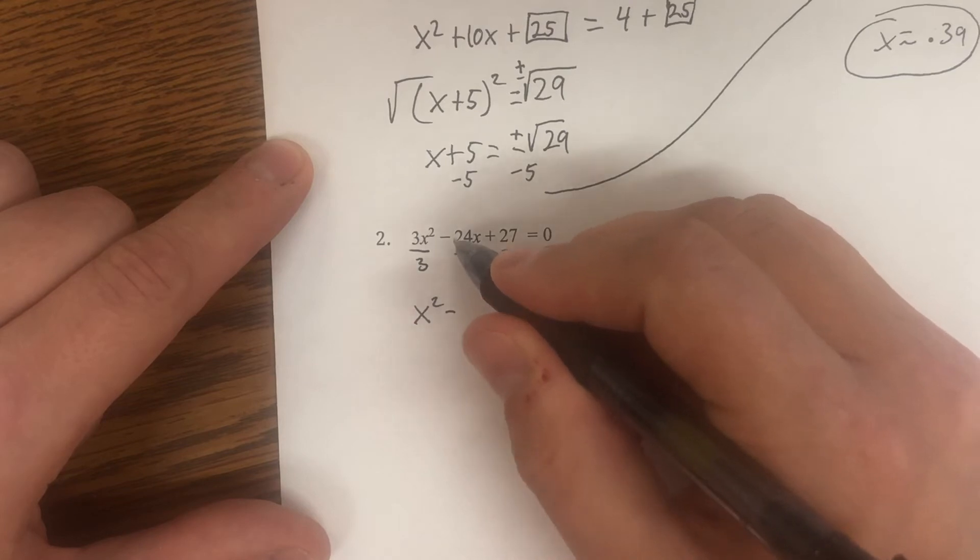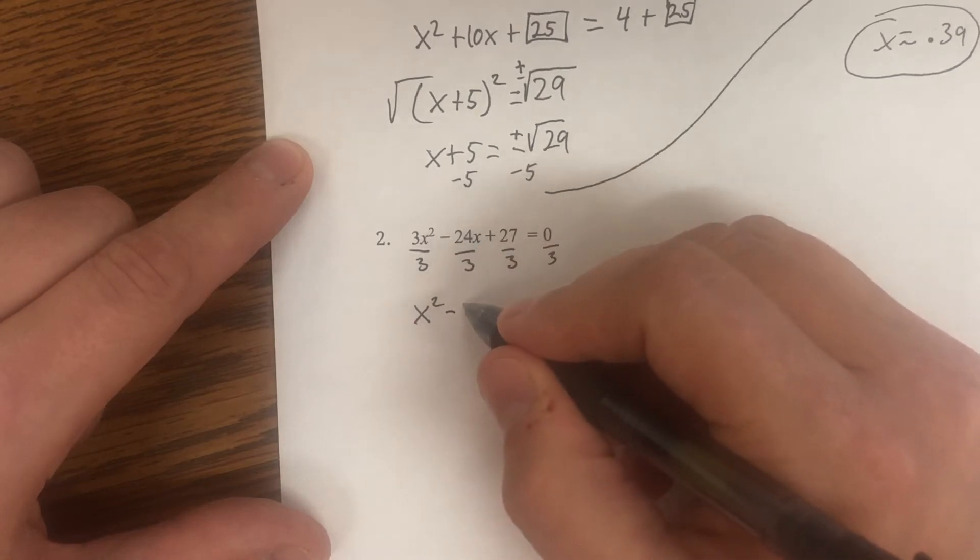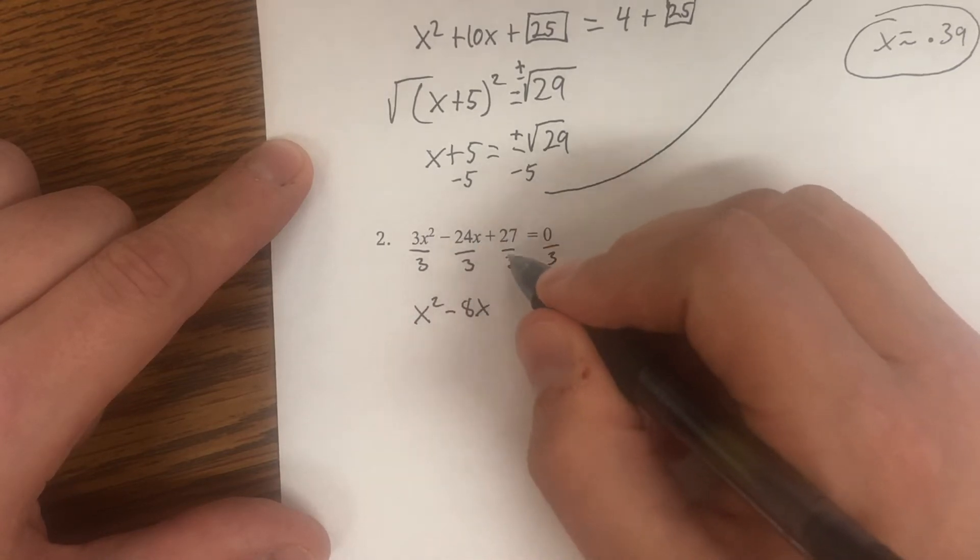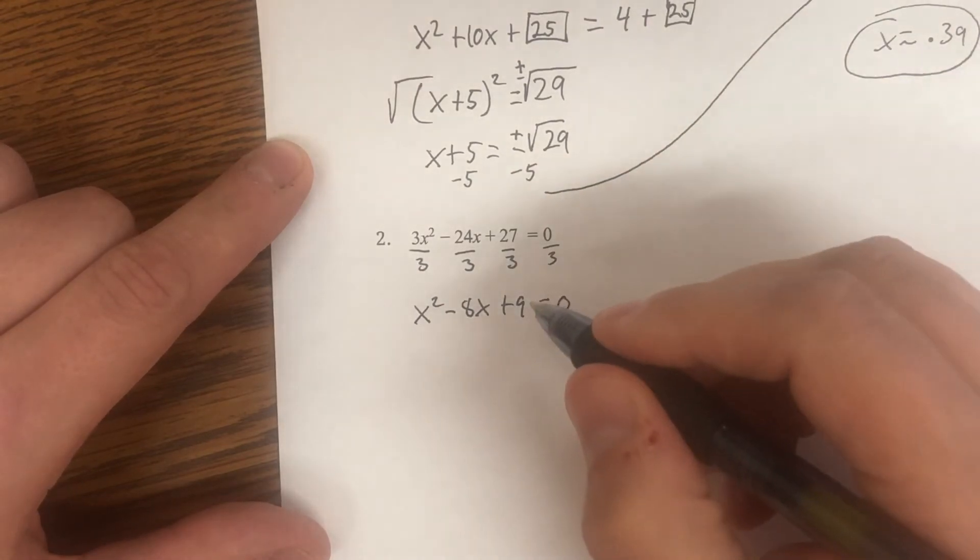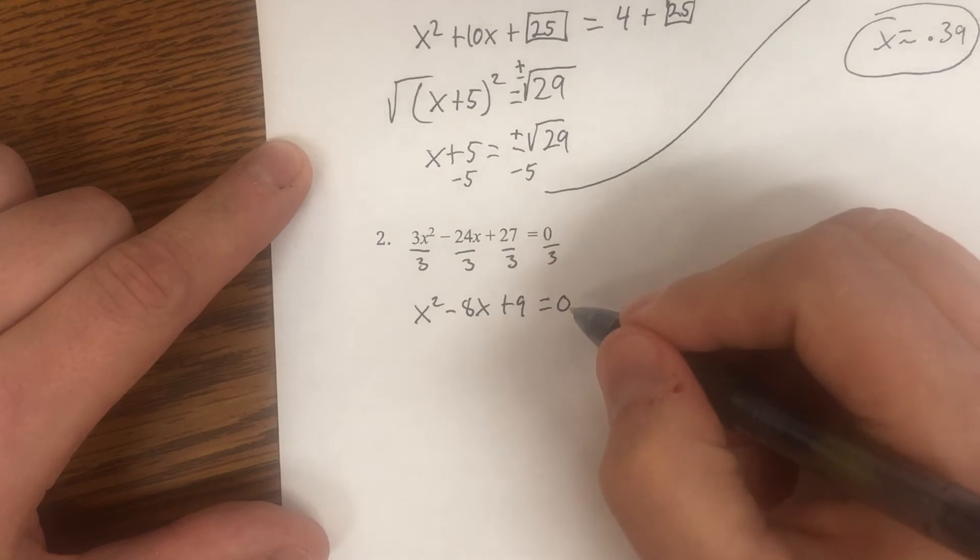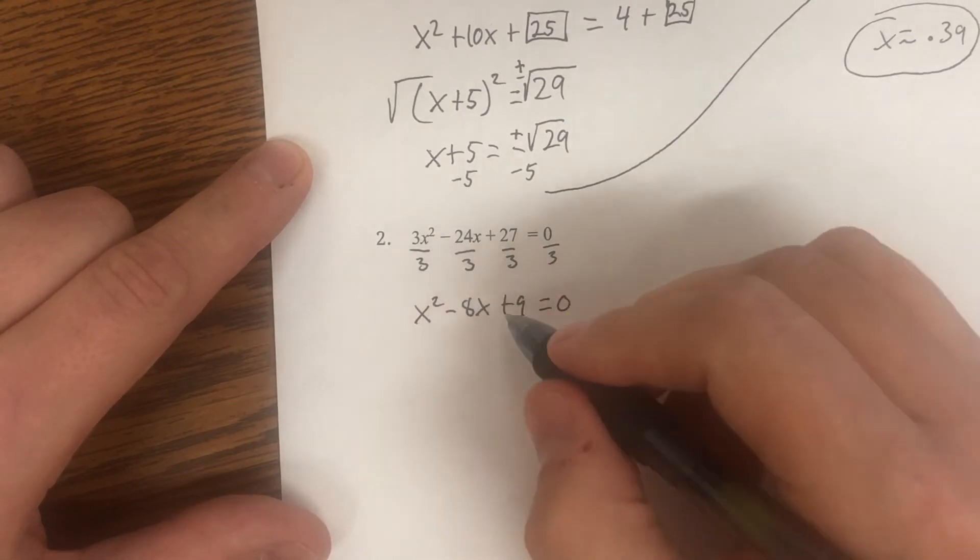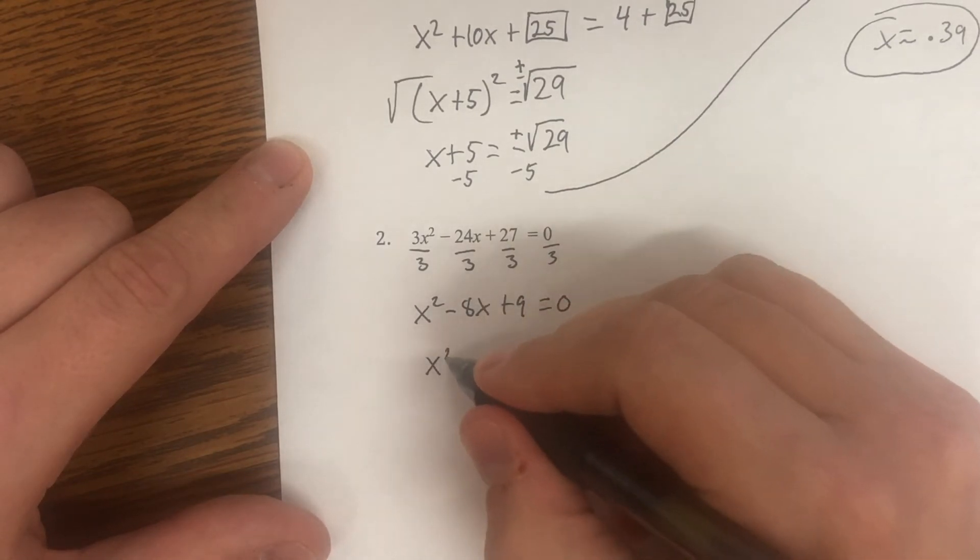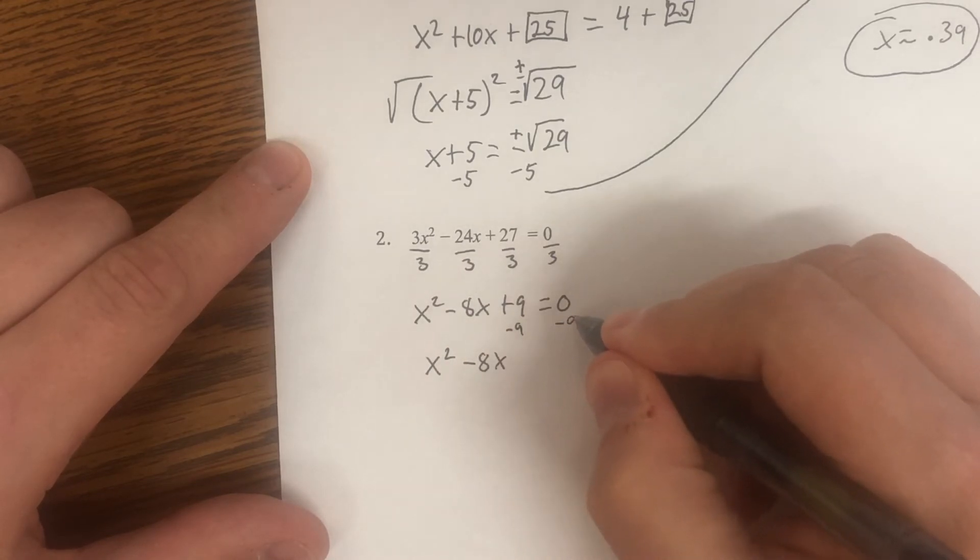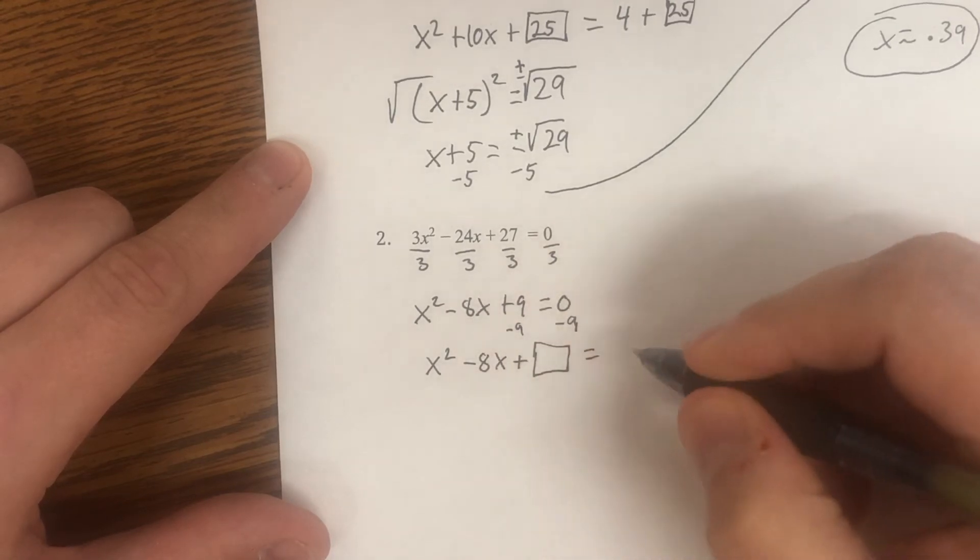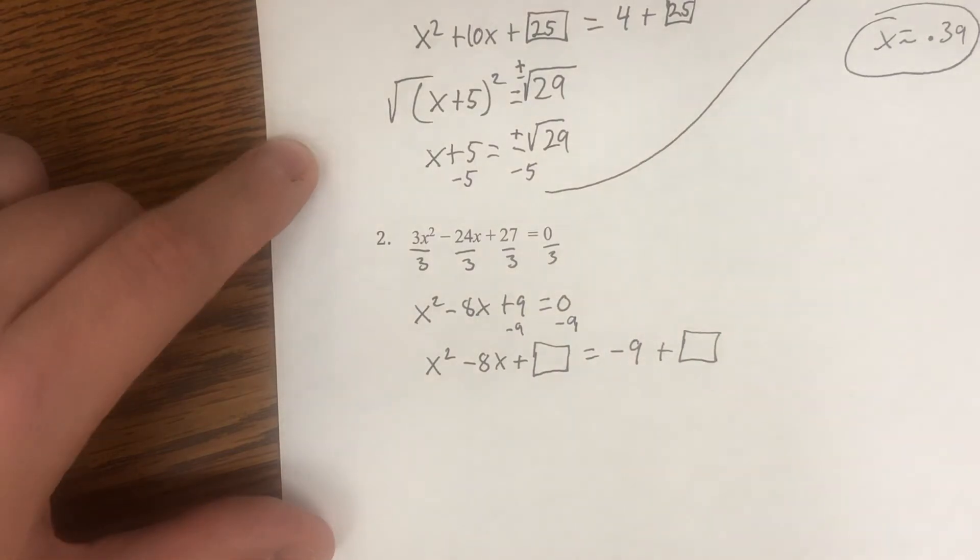So we divide everything by what that is, which is three. All terms by three. Three over three is one. Now our leading coefficient is one. 24 divided by three, we have a negative, so that's negative eight x. 27 over three is plus nine equals zero. Next step, bring the constant to the other side. We just need our x squared and our x on the left. So I'd have x squared minus eight x. Subtract nine from both sides. That's what we're doing to move it. Plus our box equals negative nine plus our box.